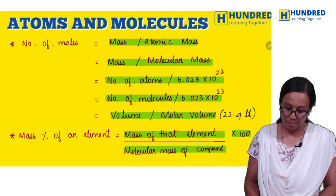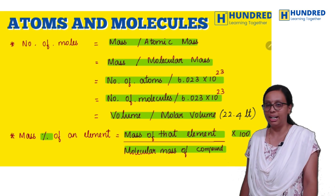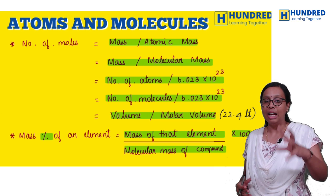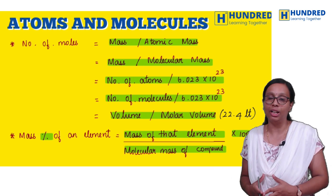Molar volume value is 22.4. Mass percentage: mass of that element by molecular mass of that component into 100. This is important, 25 sums are there, important problems we have to solve.